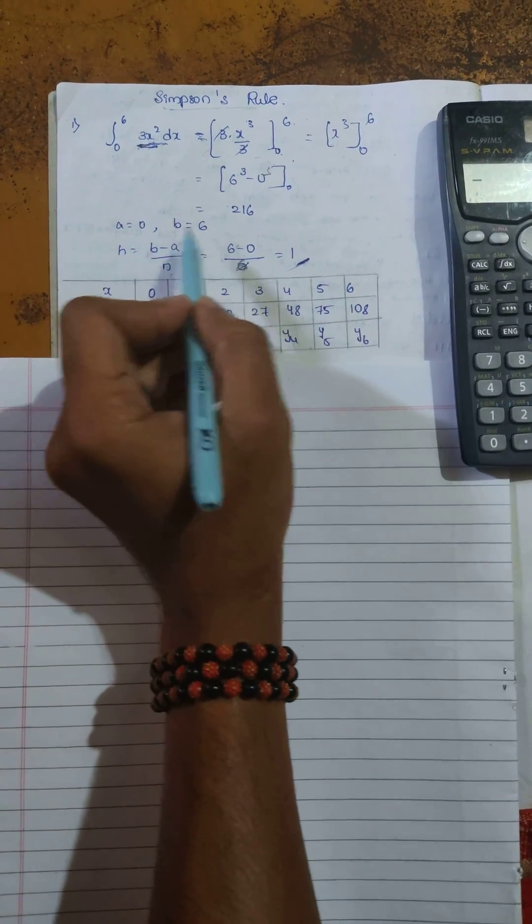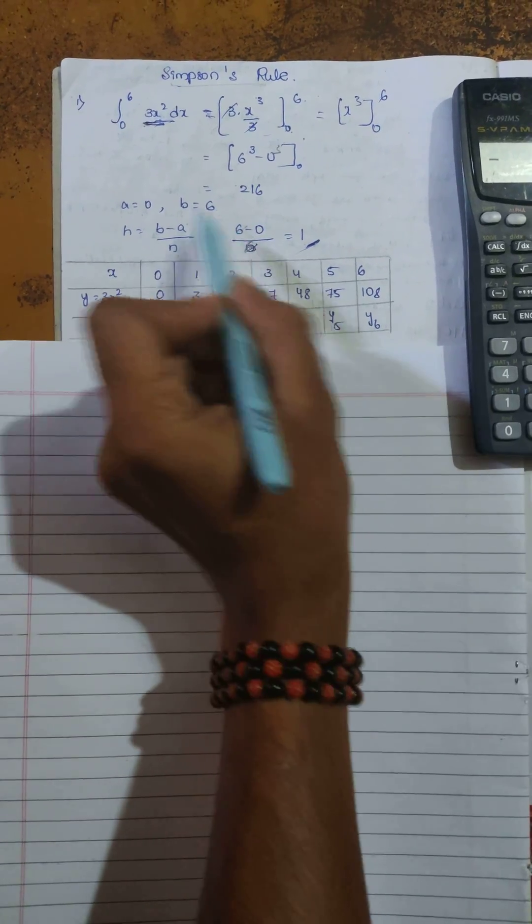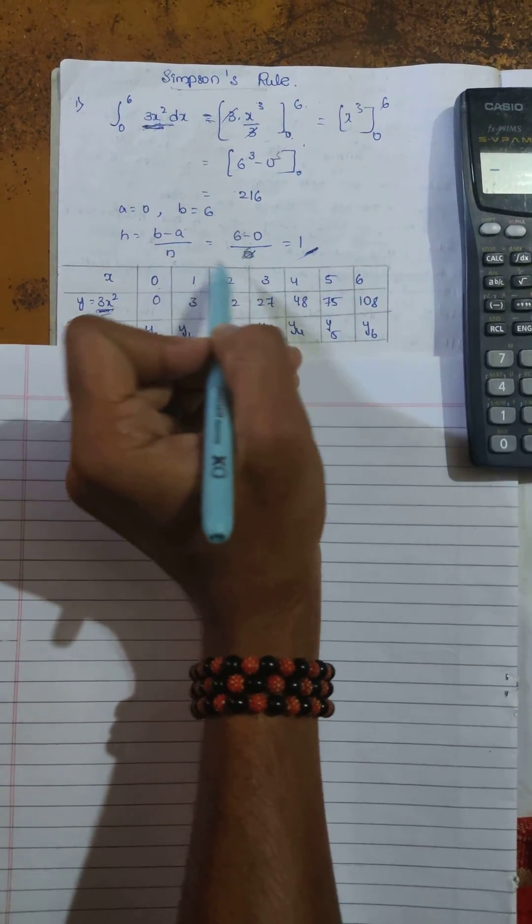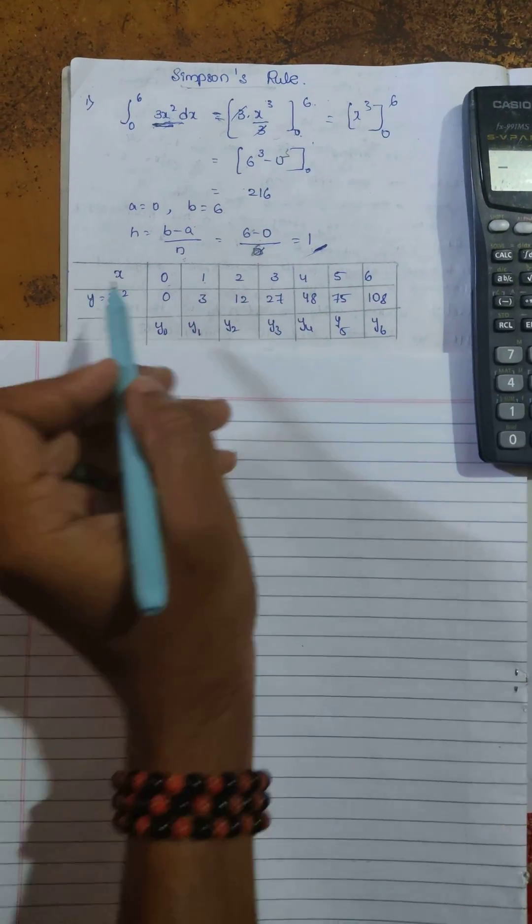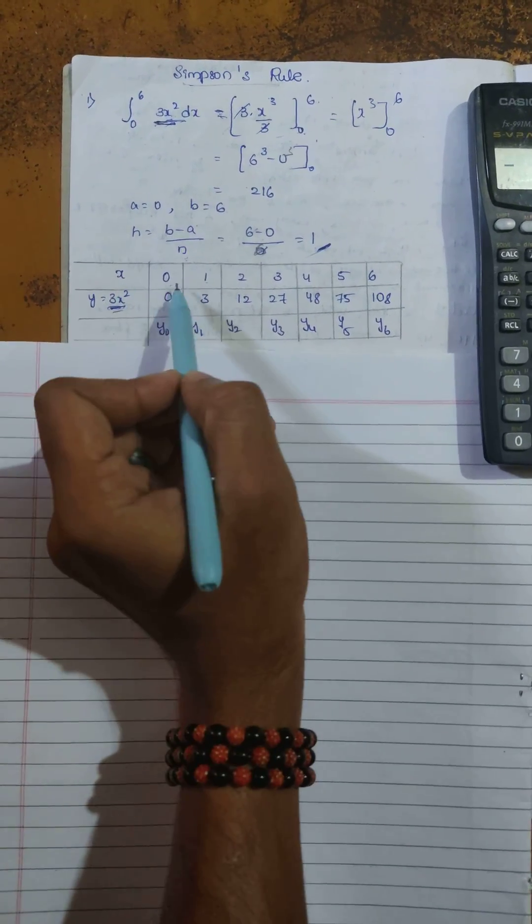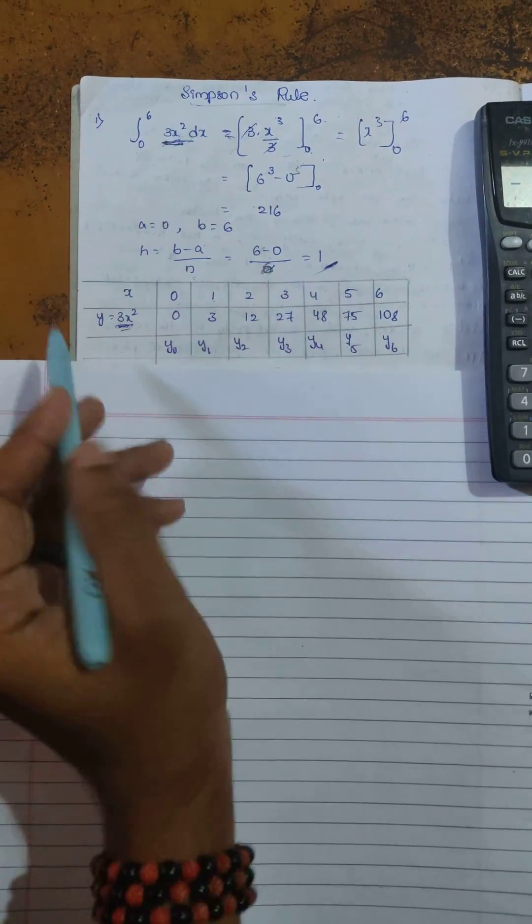a equals 0, b equals 6, h equals (b-a)/n. With b=6, a=0, and n=6, the 6s cancel and we get h=1. The x values are 0, 1, 2, 3, 4, 5, 6. The function is y = 3x².